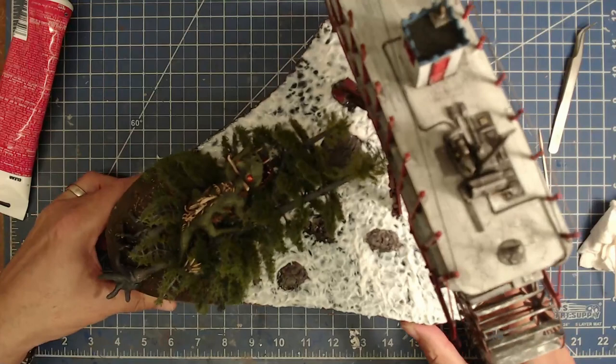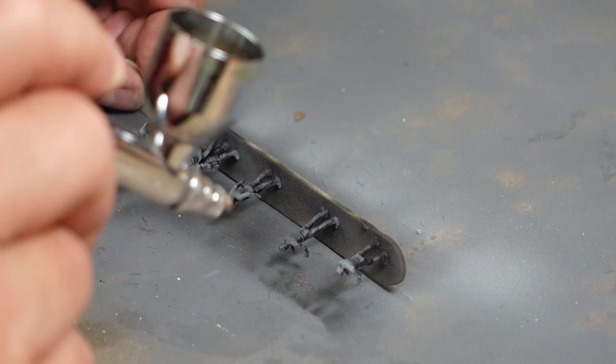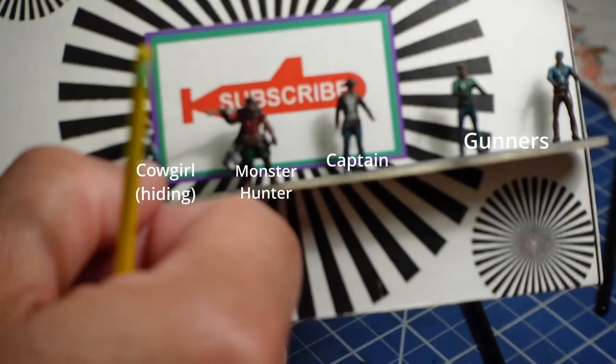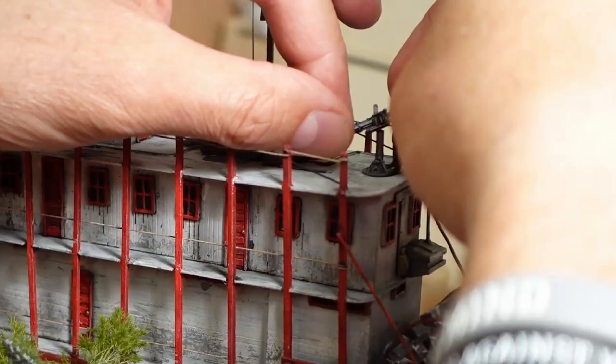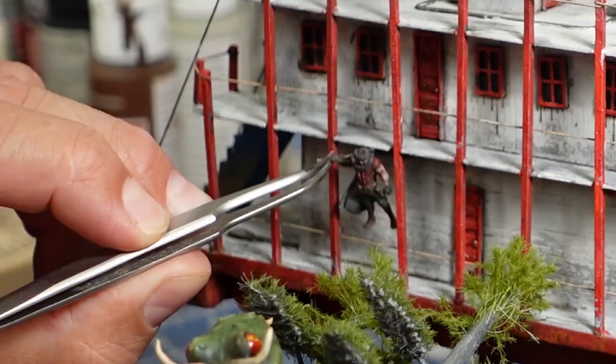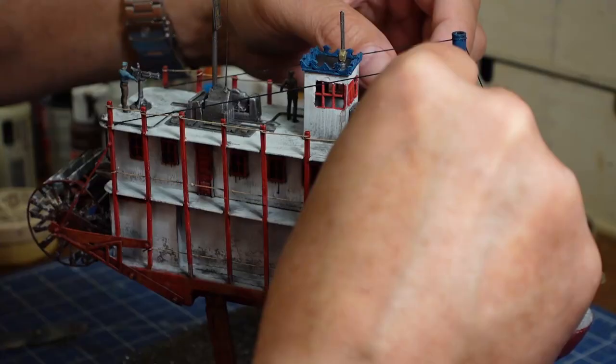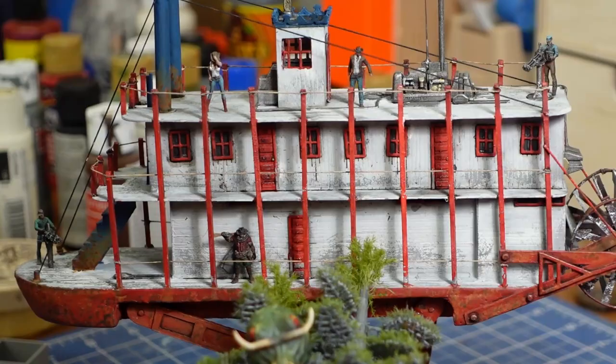Our boat needs some people. I printed out some cowboys to remedy this. They get a zenithal highlight, then hit with glazes until the colors look right, and finished off with an oil wash to bring out the details. Now the gatling guns, the gunners, the monster hunter, the captain, and the cowgirl all take their places on the boat.